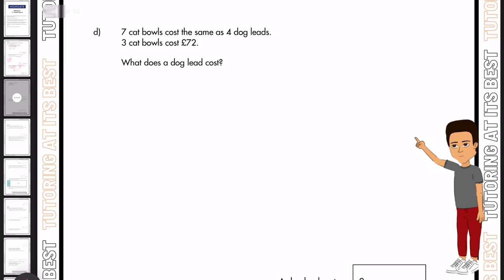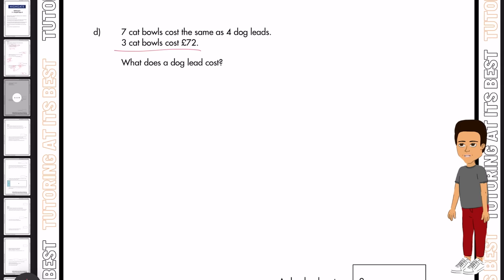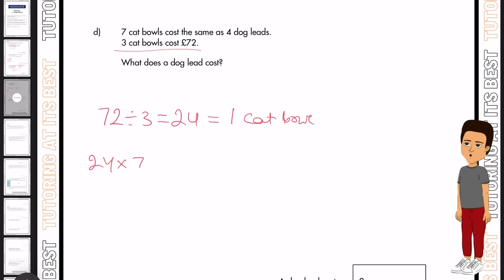Part D. Seven cat bowls cost the same as four dog leads. And three cat bowls cost £72. So 72 divided by three is £24, and that's for one cat bowl. Now we have this information.